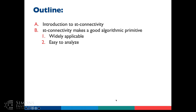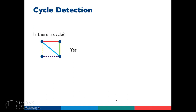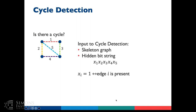So how can you use ST connectivity to solve other types of problems? I'll talk about why it's widely applicable, starting with an example of cycle detection. With cycle detection, we want to know: is there a cycle? The input is given in the same way as the ST connectivity input — a bit string that tells us whether edges are present or not. We want to figure out how to use ST connectivity to solve this problem.